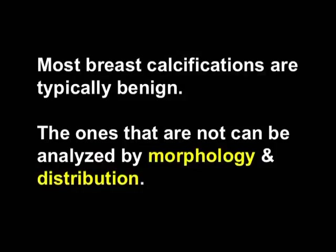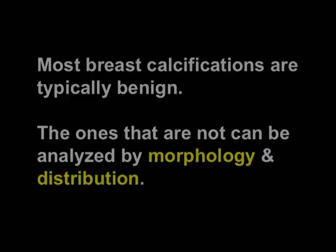To summarize: most breast calcifications are benign in a typically benign, recognizable way. Those that you can't classify as benign, you analyze the morphology and the distribution. The terms you end up using for those two categories will lead you to your BIRADS assessment category.